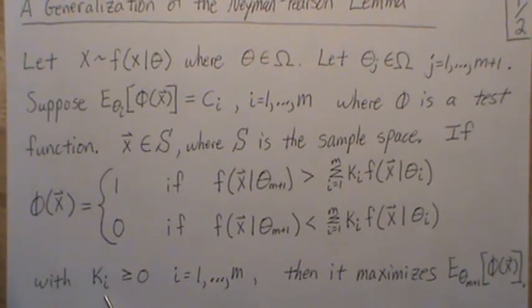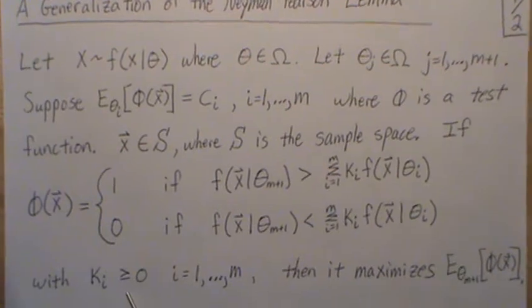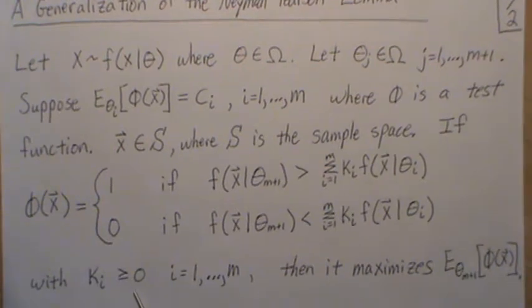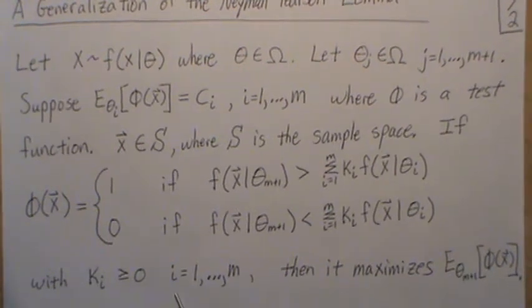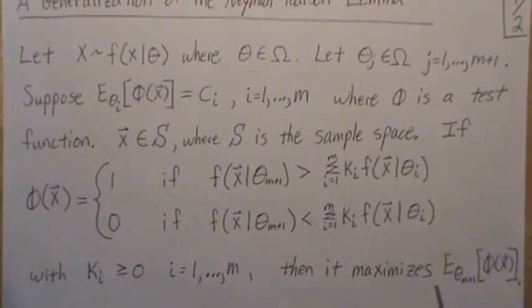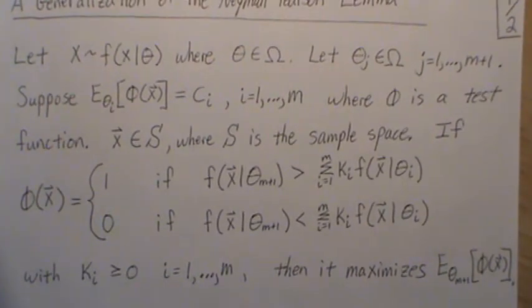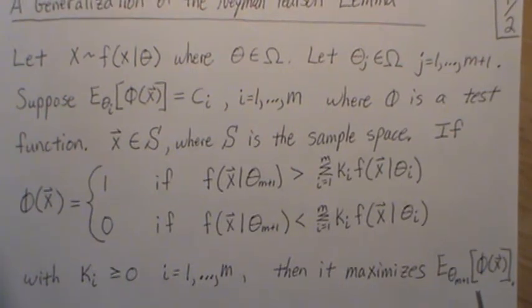The k_i's have to be positive or non-negative. This test function then maximizes the expected value of our test function given that theta n plus 1 is true — so this is like saying that it maximizes the power.